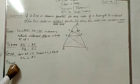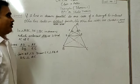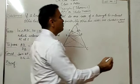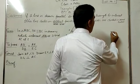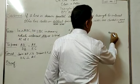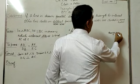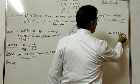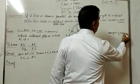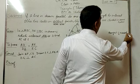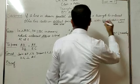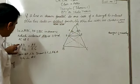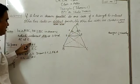Before starting the proof, what knowledge should we have? The area of a triangle is half into base into height. We are to reach AD upon DB and AE upon EC.